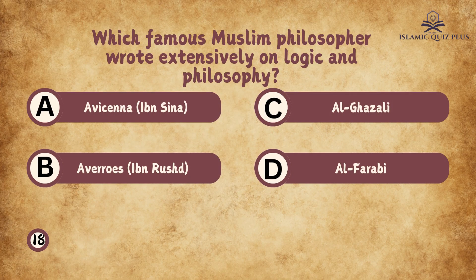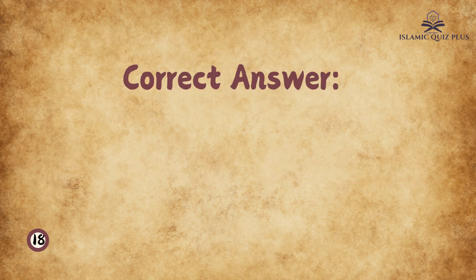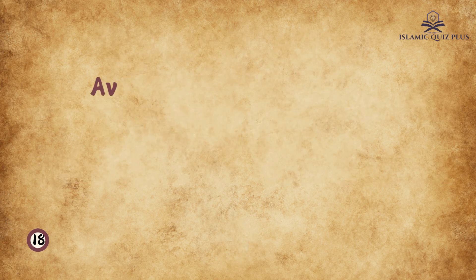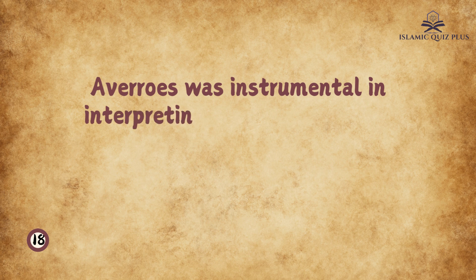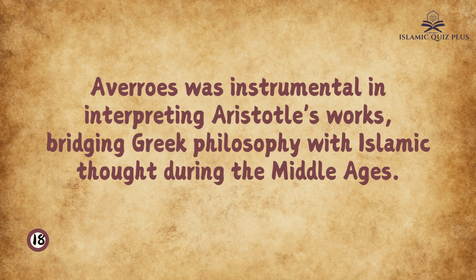Question 18: Which famous Muslim philosopher wrote extensively on logic and philosophy? A. Avicenna, B. Averroes, C. Al-Ghazali, D. Al-Farabi. The correct answer is B. Averroes. Averroes was instrumental in interpreting Aristotle's works, bridging Greek philosophy with Islamic thought during the Middle Ages.